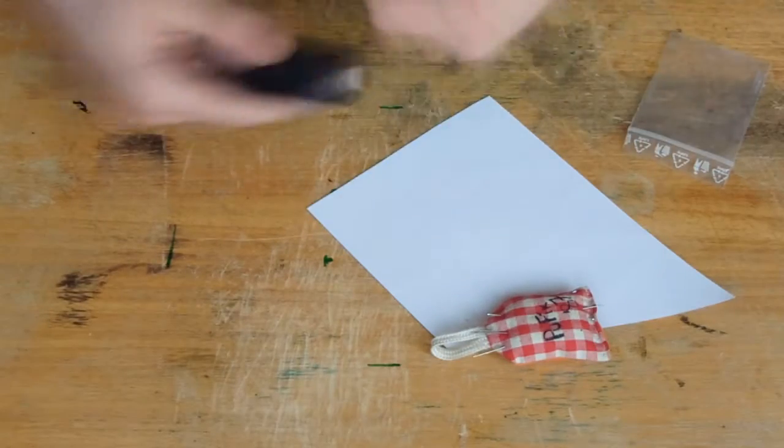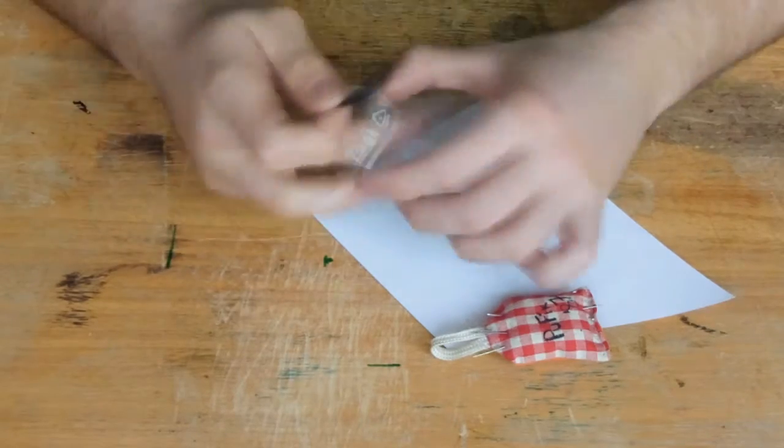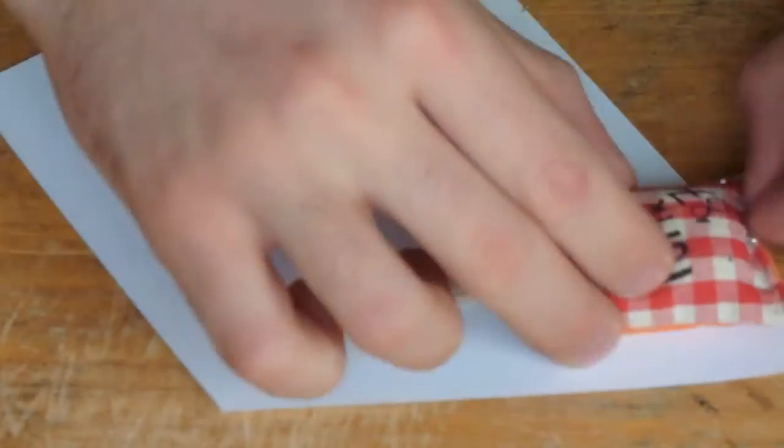Small kit of needles and threads for repairing your clothes and such are essential part of your survival kit. You can even add some buttons or safety pins.